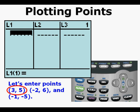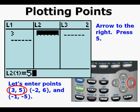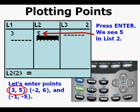First we'll enter the point (3, 5). Press the number 3, then ENTER. We can see the number 3 in List 1. Next, arrow over to the right to List 2 and press the number 5, then press ENTER. We see the number 5 in List 2.